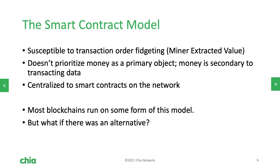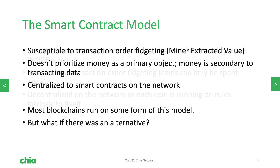Other problems with the smart contract model include the fact that money is not a primary object — it's a secondary piece of data to transaction data. And thirdly, smart contracts are points of centralization. Most blockchains run off this model, but Chia does not.